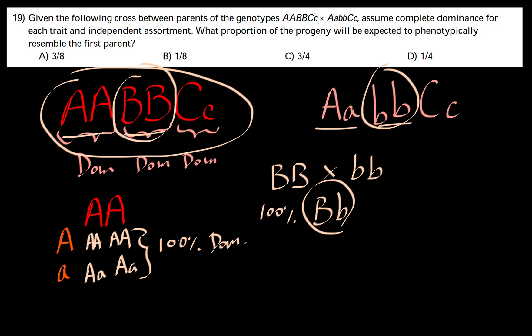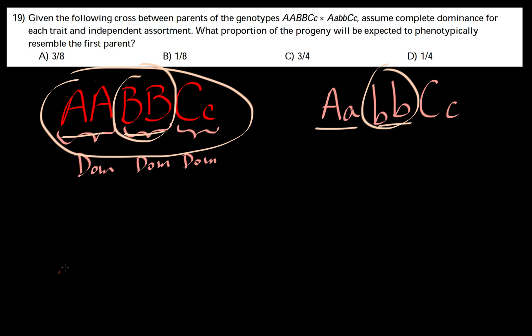But when you cross the C's, we have a different story. The first parent is heterozygous and the second parent is also heterozygous. When you cross heterozygous with heterozygous,